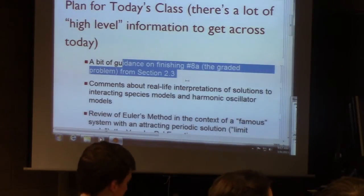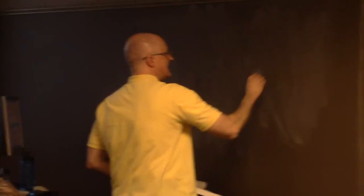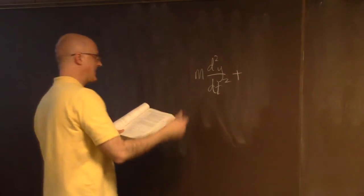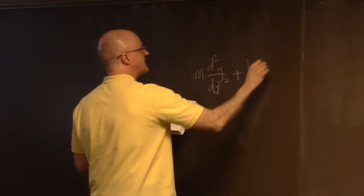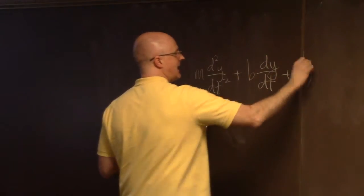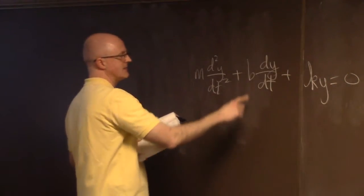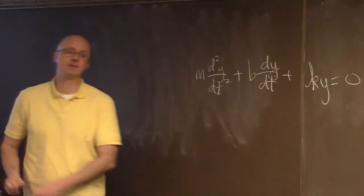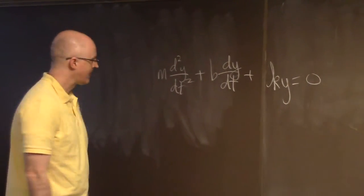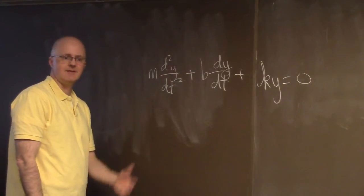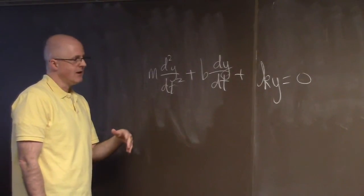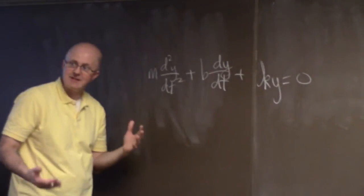What about number 8A? You're trying to show in that problem — it's a proof — that if you take the second-order equation for a mass and a spring: m times the second derivative of y with respect to t, plus b times dy/dt, plus k times y equals zero, where k is the spring constant, b is the damping coefficient, and m is the mass — if you've got two solutions and you add those solutions, then you get another solution. The sum of any two solutions is a solution.